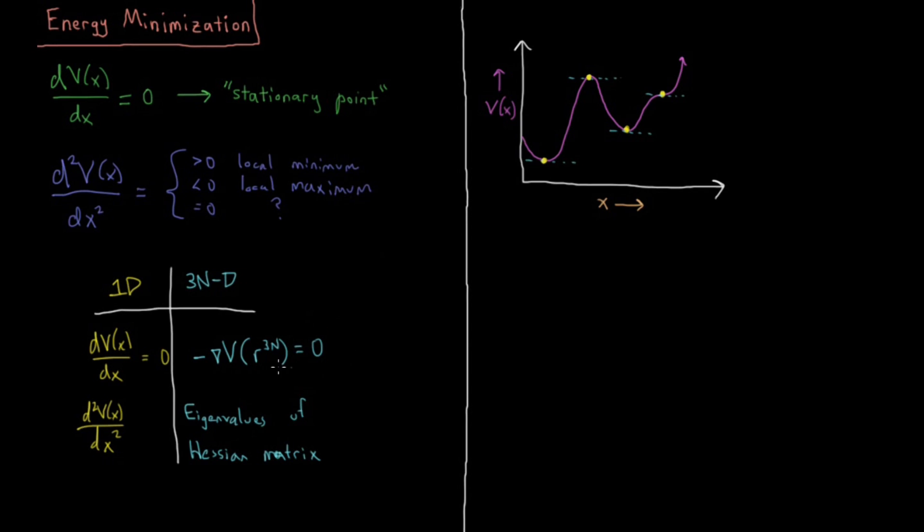That is a matrix which is 3N by 3N dimensional, and the elements Hᵢⱼ are equal to the second mixed partial derivative of V(r³ᴺ), our 3N-dimensional potential energy function, with respect to the i-th dimension and the j-th dimension. This is our second derivative analog.